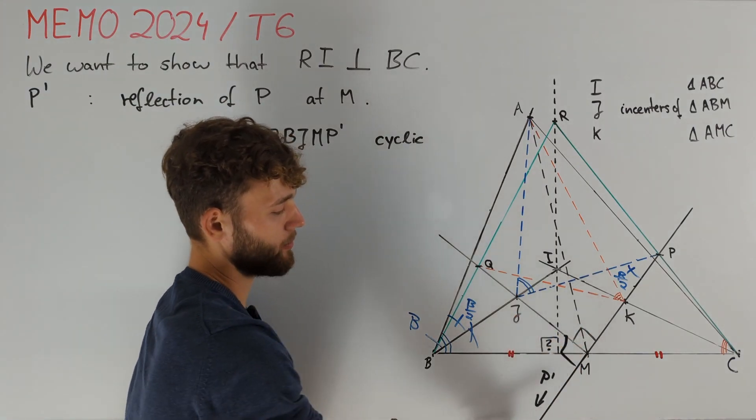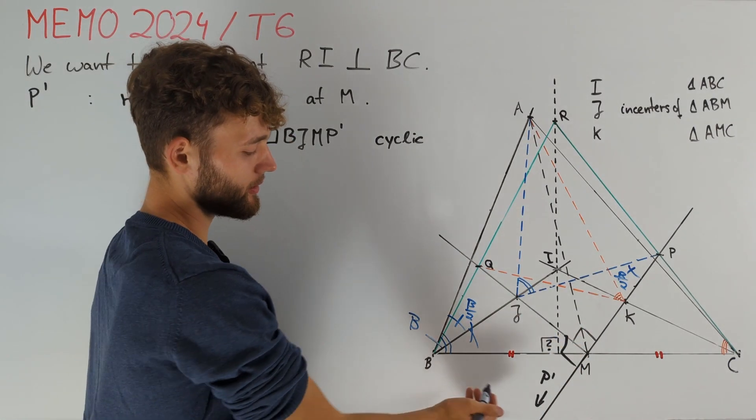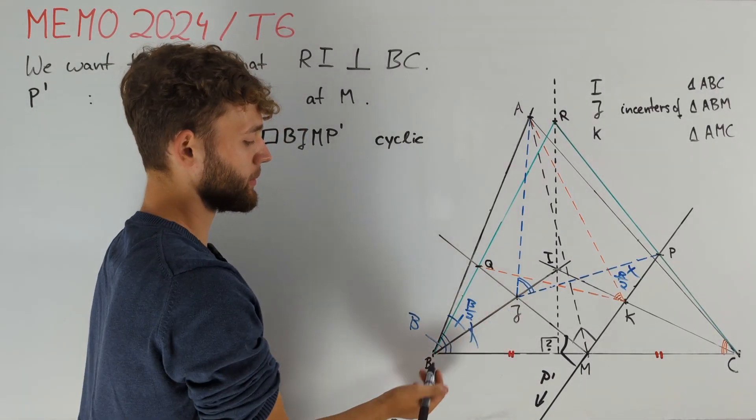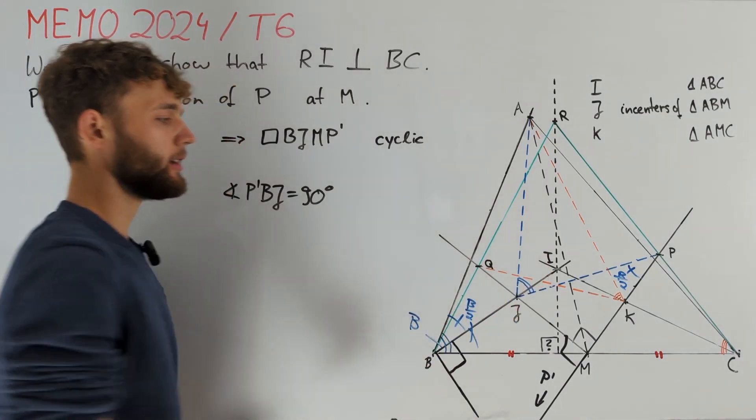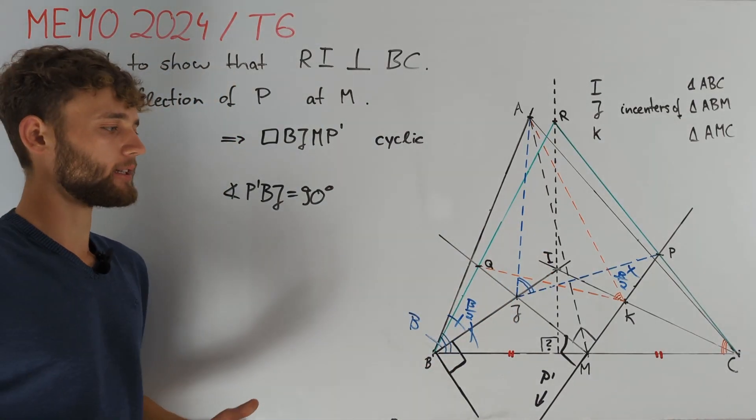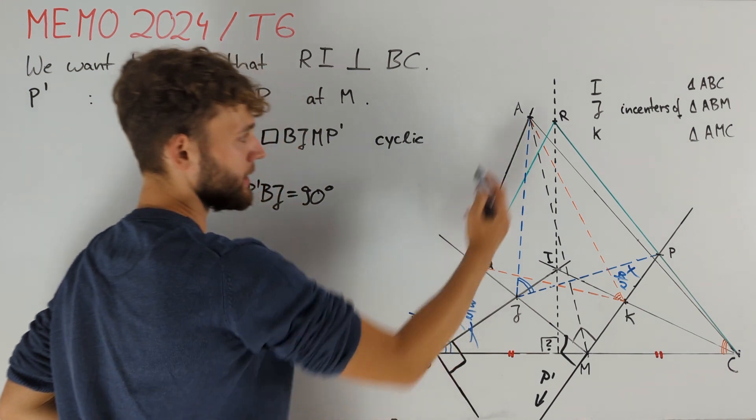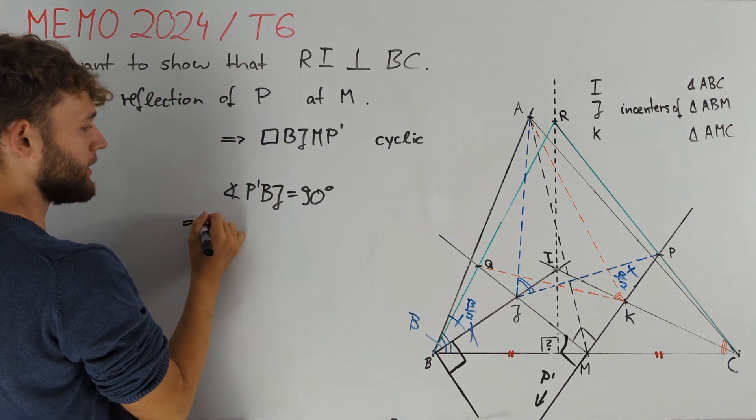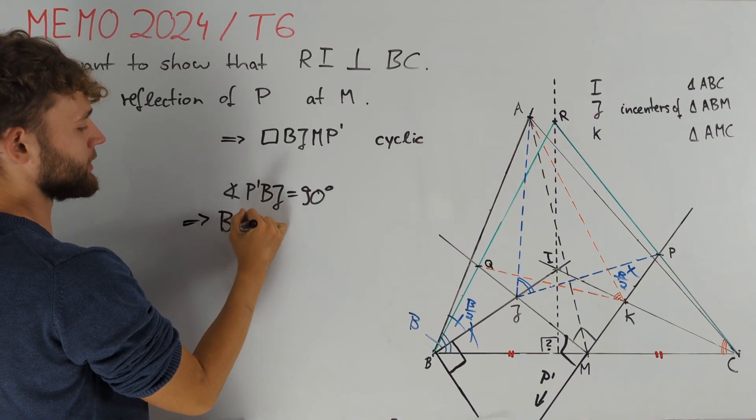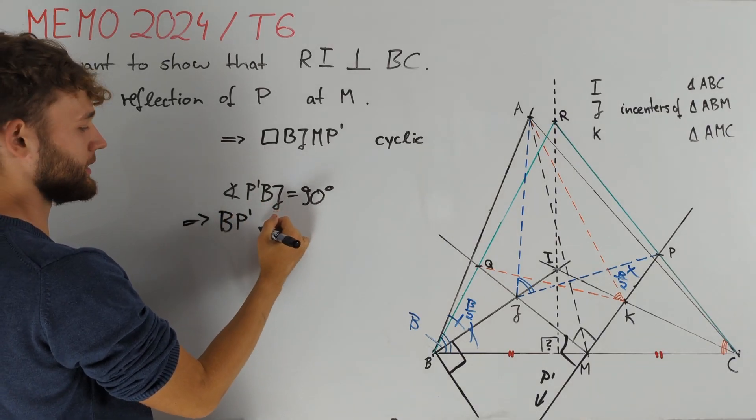Importantly, this also tells us that the opposite angle P'BJ is equal to 90 degrees. Since line BJ equals BI is just the interior angle bisector of angle CBA, this angle condition implies that line BP' is the exterior angle bisector of angle CBA.